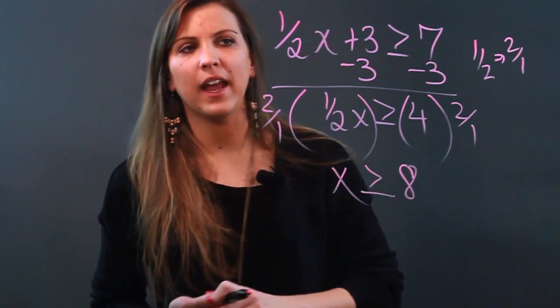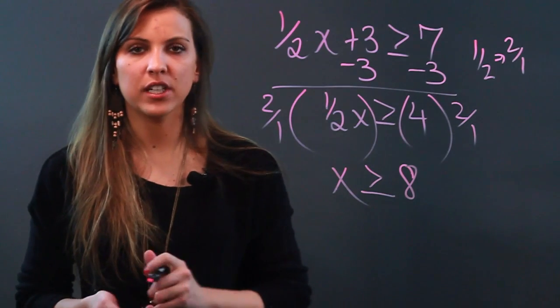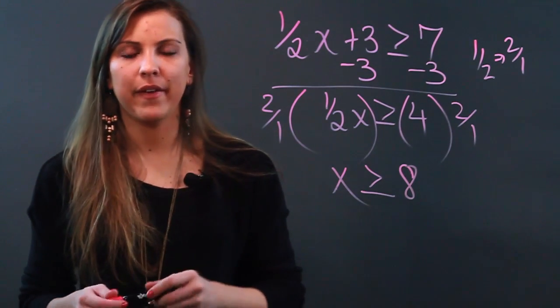So X is greater than or equal to 8. To get rid of a fraction in an inequality, multiply by that fraction's reciprocal.